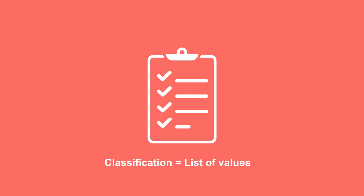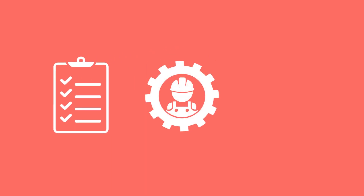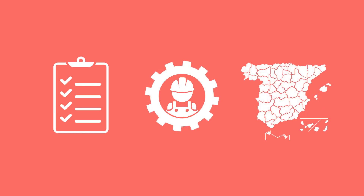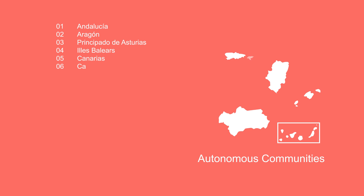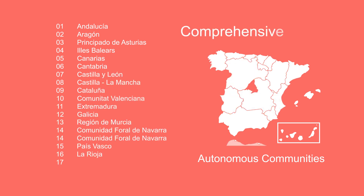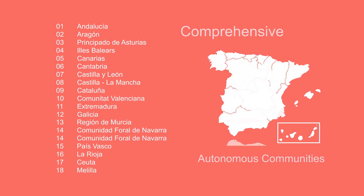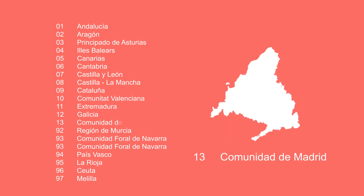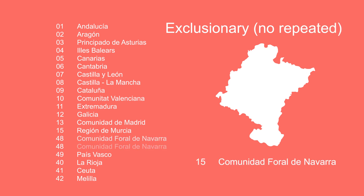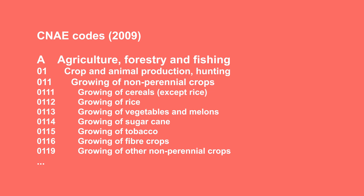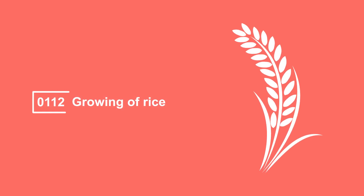Strictly speaking, a statistical classification is the organized list of values that a categorical variable, such as work, economic activity or province of residence, can have. The classifications must be both comprehensive — they should cover all possible values of the variable — and exclusionary, meaning no repeated values or overlapping. To facilitate data processing, the classifications assign an alphanumeric code to each value.